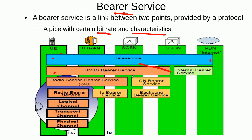To support the UMTS bearer service, we further need two bearer services. One is the core network bearer, from GGSN to SGSN. The second is the Radio Access Bearer, from SGSN to the user equipment. This radio access bearer is further divided into the IU bearer and the radio bearer, which goes from the UTRAN to the user equipment. This radio bearer is then mapped to logical, transport, and physical channels discussed in the previous lecture.